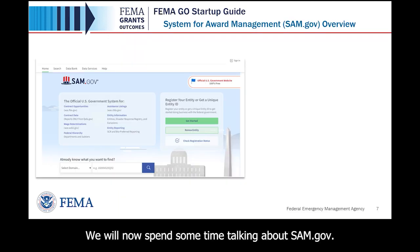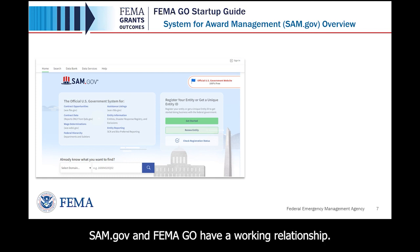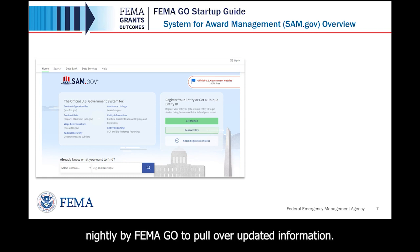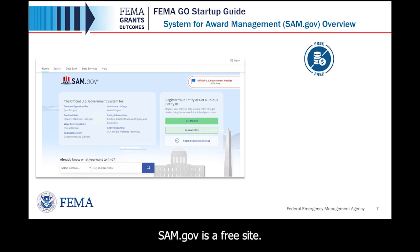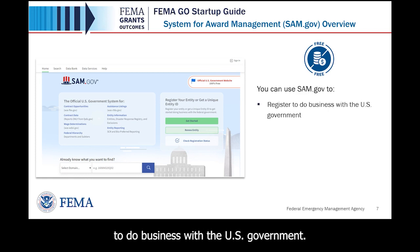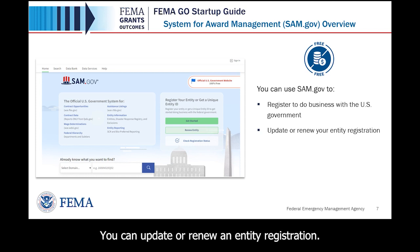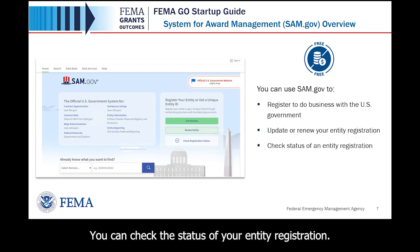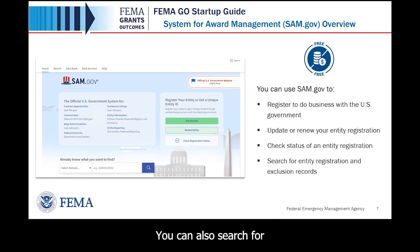We will now spend some time talking about SAM.gov. SAM.gov and FEMA GO have a working relationship. Automated sweeps of SAM.gov are conducted nightly by FEMA GO to pull over updated information. SAM.gov is a free site. You can use SAM.gov to register to do business with the U.S. government, update or renew an entity registration, check the status of your entity registration, and search for entity registration and exclusion records.